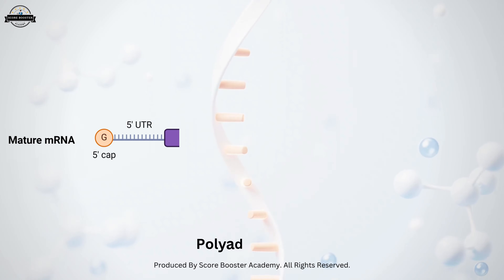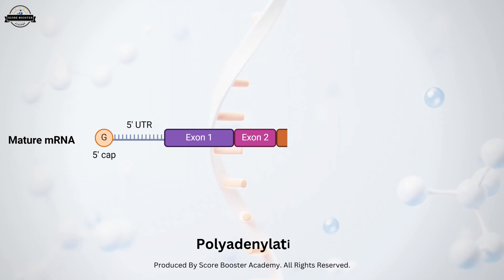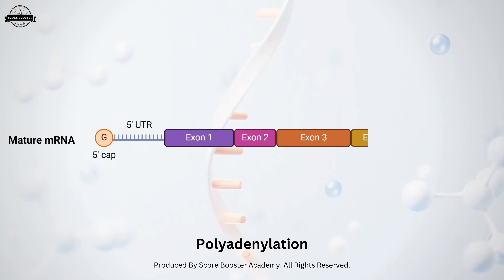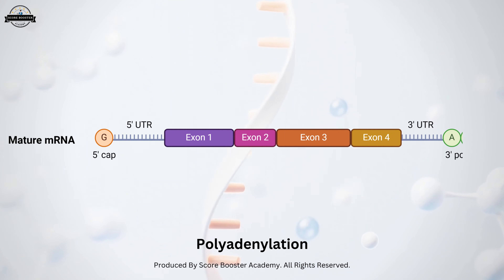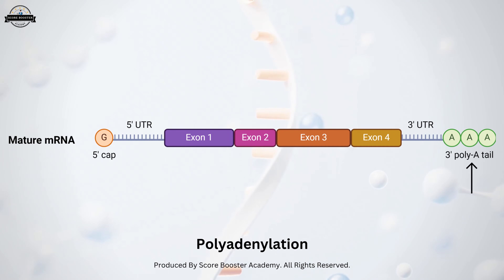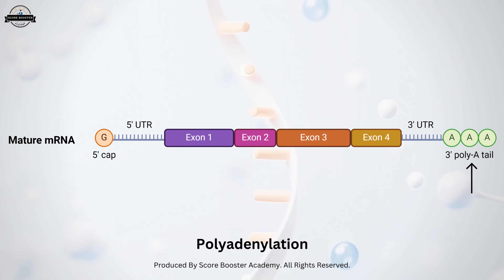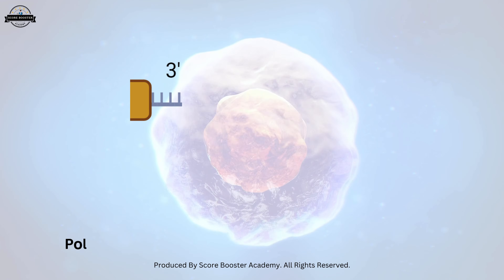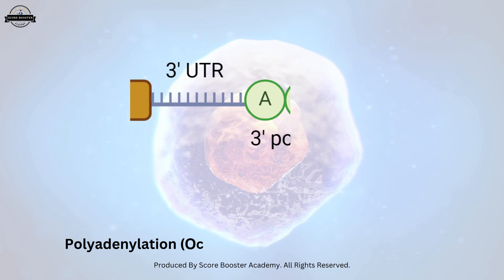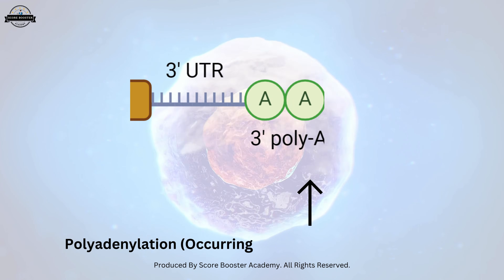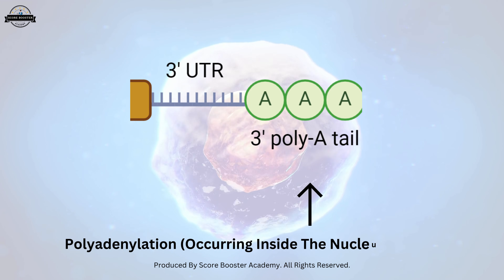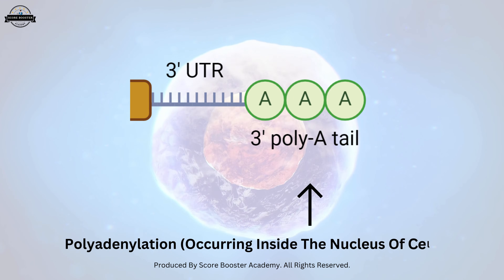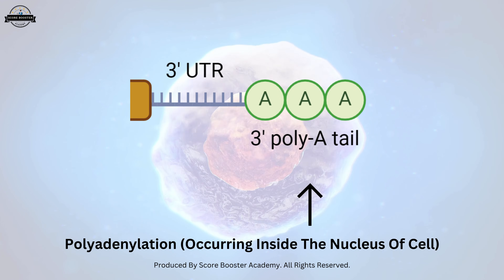This process, known as polyadenylation, involves the cleavage of the RNA at a specific site, followed by the addition of a string of adenine nucleotides. The poly-A tail enhances the stability of the RNA and facilitates its export from the nucleus to the cytoplasm.